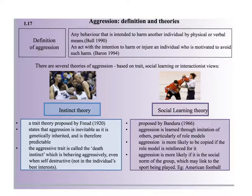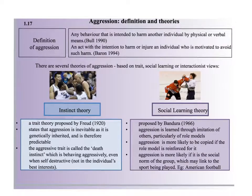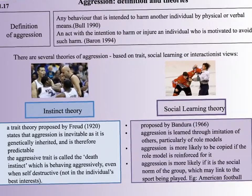Welcome to this video on aggression. We need to know about four different types of theories, but first we need to understand the definition of aggression. There are two definitions: Bull in 1990 defines it as any behavior intended to harm another individual by physical or verbal means, and Baron in 1994 defines it as an act with intention to harm or injure an individual who is motivated to avoid such harm.